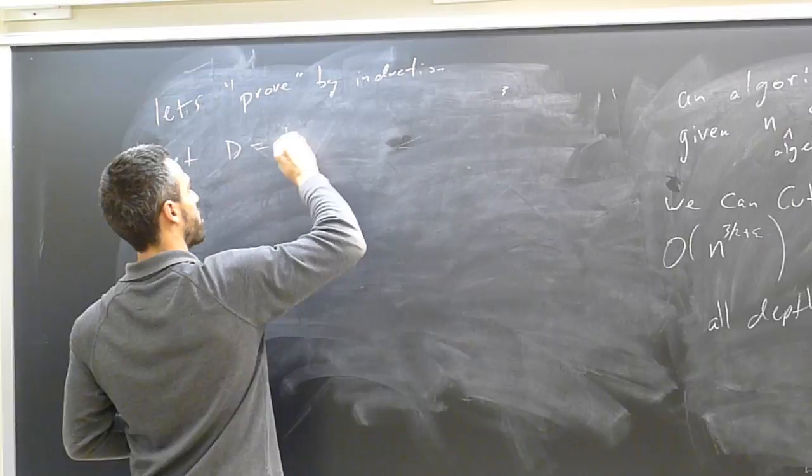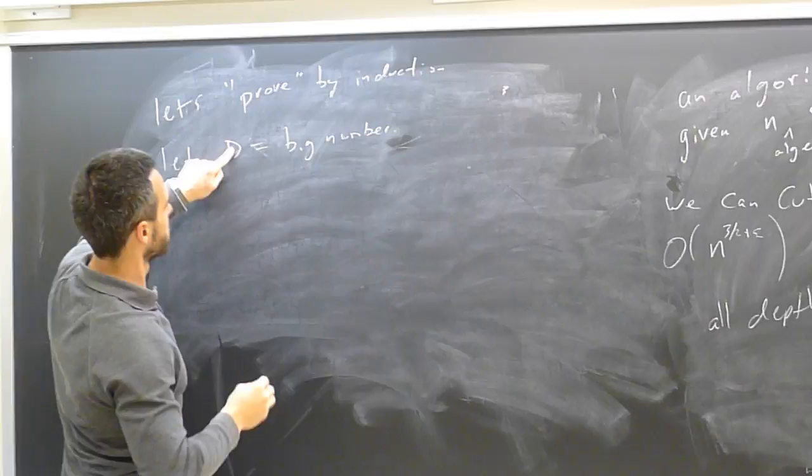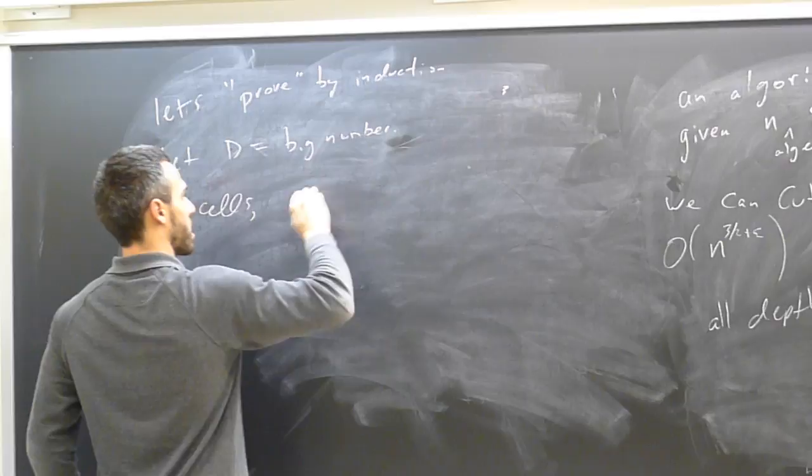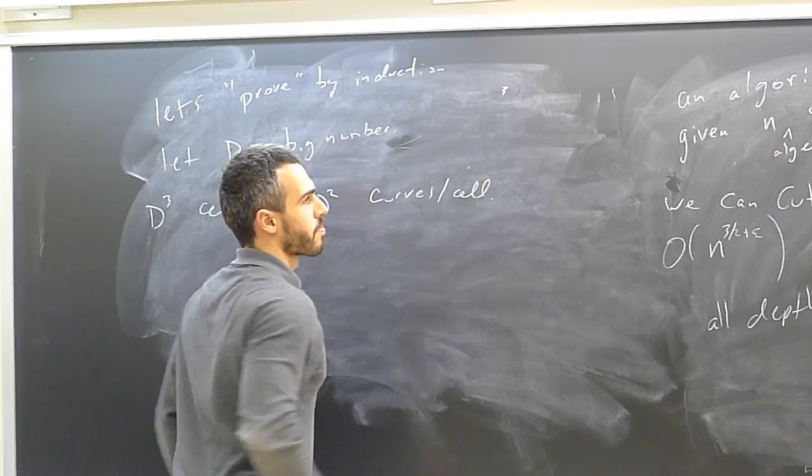But let's just take a look at what the numerology would say. Let's imagine that depth cycles actually were a local thing. And so whenever a depth cycle occurred, it magically always occurred inside of the same cell. So then the numerology would be in my favor. So I'll say, let's prove my induction. So I'm going to pick D to be a big number. Big number, 10 to 10, whatever. Of course, this number of capital D is going to depend on the degree of my algebraic curves, but let's forget about that factor for the moment.